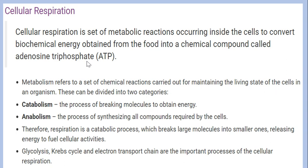In short, this compound is called ATP. Metabolism refers to a set of chemical reactions carried out for maintaining the living state of the cells in an organism. These can be divided into two categories: catabolism and anabolism.